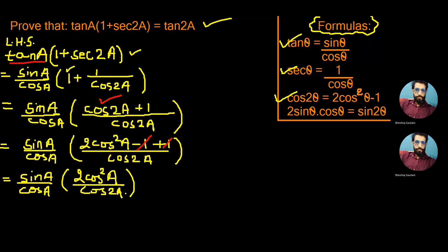Now, breaking the bracket, we can write sin A by cos A multiply 2 cos² A by cos 2A.